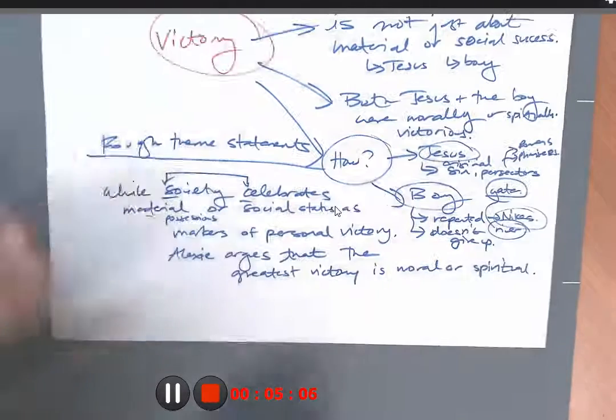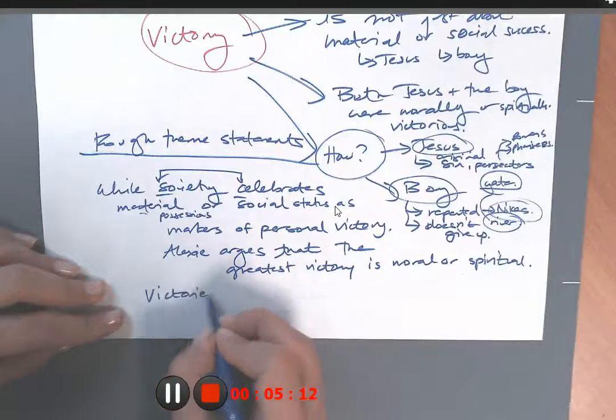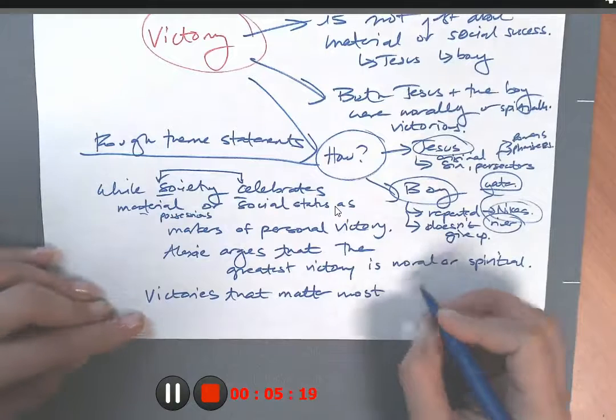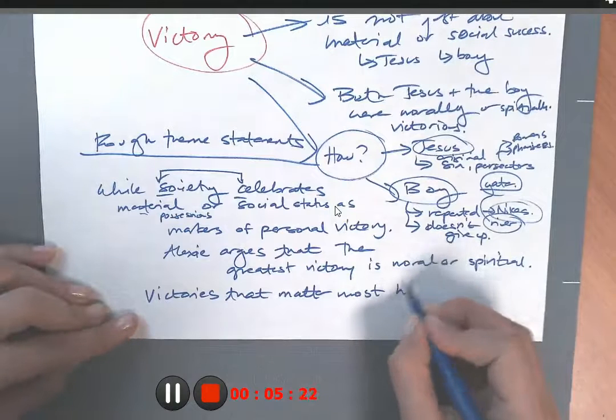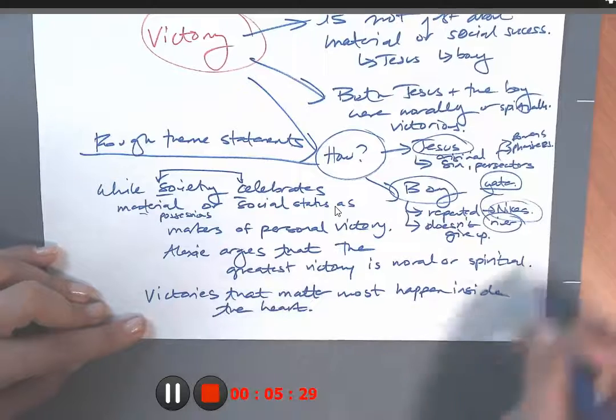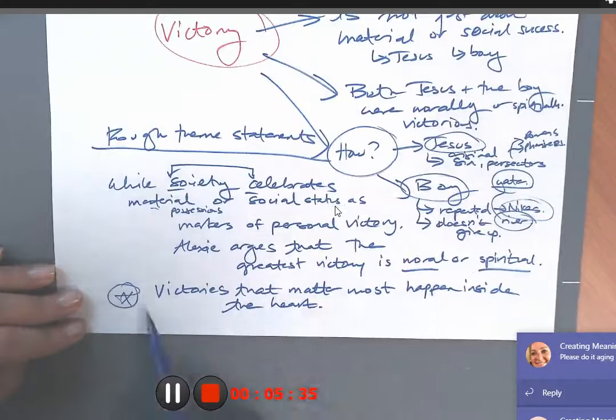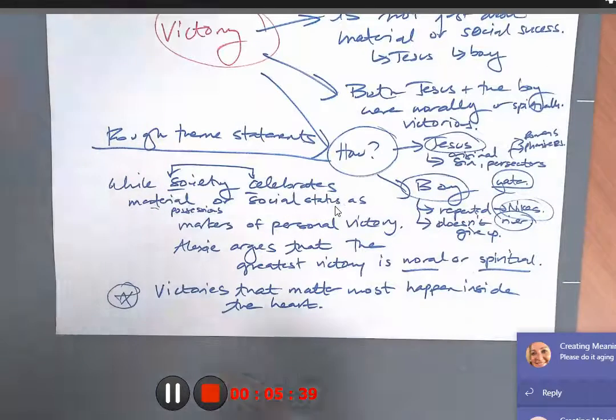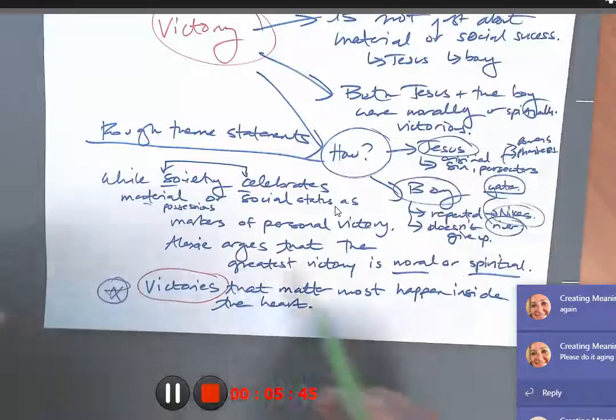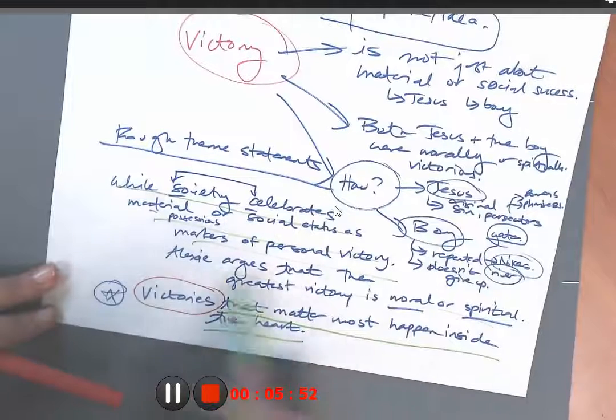Holy man. That's a good one, I think. So we're going to summarize here. Victory, victories that matter most, most, happen inside the heart. Or just happen inside, because that represents the moral spiritual. So that is the final theme I'm going to go with. So you see what I did there? What I did was, I narrowed down my thinking until I came up with a brief statement that has a topic and opinion in it. And I could explain this with a longer theme statement if I wanted to.